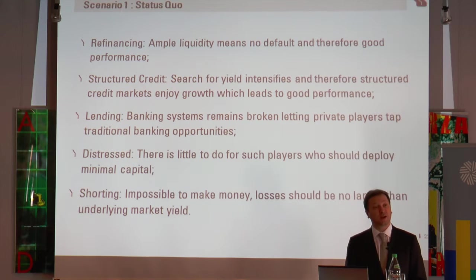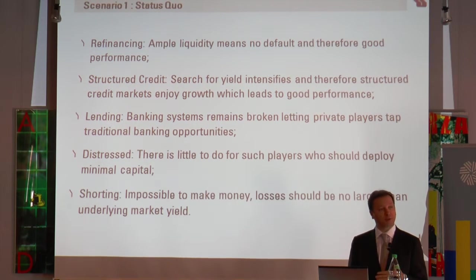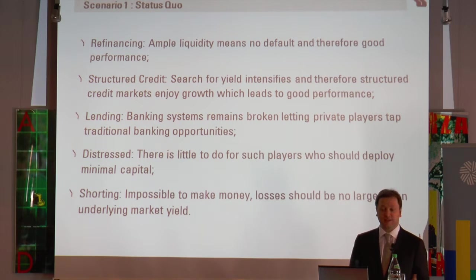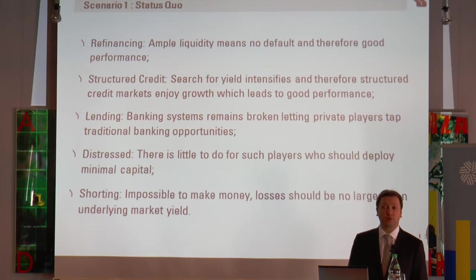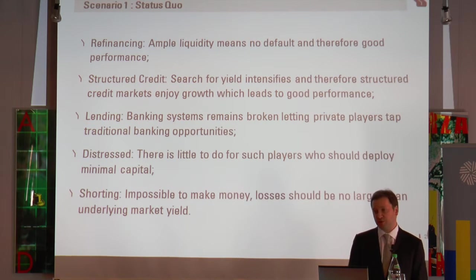Refinancing in the status quo scenario is great — you have ample liquidity and can target even the worst companies; they will refinance and you'll pick up extra spread. Structured credit should also perform well because the hunger for yield will drive massive demand. Lending is good — banks are still staying away, meaning no competition. However, the risk on lending is that at some point it will be crowded out, and the spread of, say, 8% for lending to a good company could get arbitraged down to 4-5% as other investors spot the same opportunity.